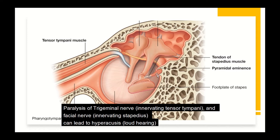A similar function is performed by another muscle inside the middle ear cavity, the stapedius, which attaches to the stapes and is innervated by the facial nerve. It also prevents large oscillations of the ossicles. A lesion of the facial nerve causing paralysis of the stapedius would again lead the patient to present with hyperacusis.